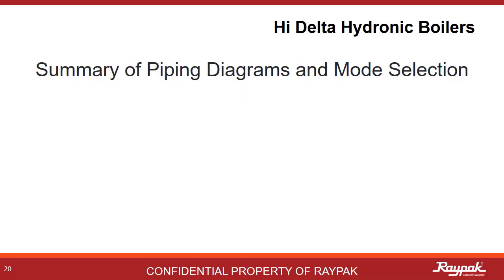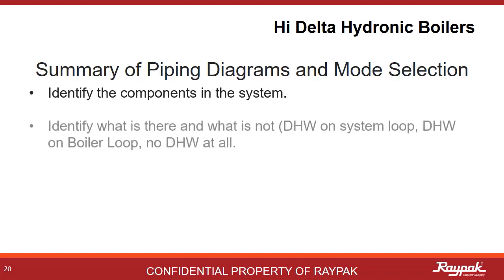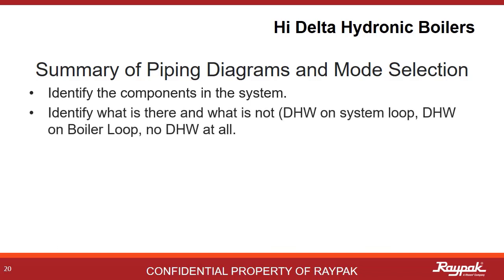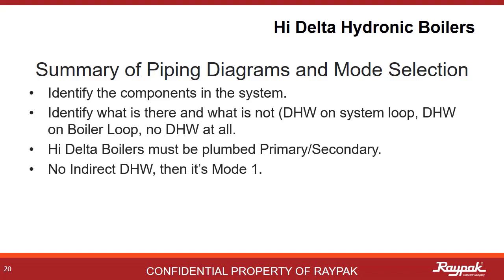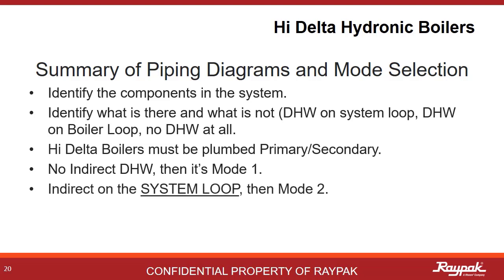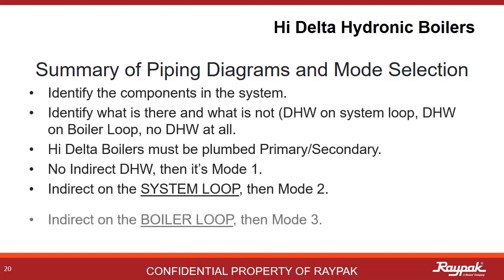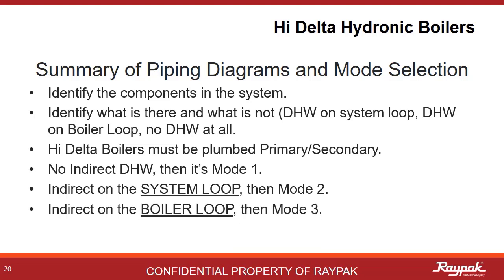Here are some overall pointers on plumbing systems and how they relate to mode selection for type H boilers. Identify all of the parts of the system and look for what is there as well as what is not there. Make sure it is plumbed primary-secondary. In most cases, with no indirect domestic hot water present, Mode 1 will be your choice. If you have an indirect domestic hot water present on the system loop, then it's Mode 2. If the indirect domestic hot water is present on the boiler loop, then it's Mode 3.